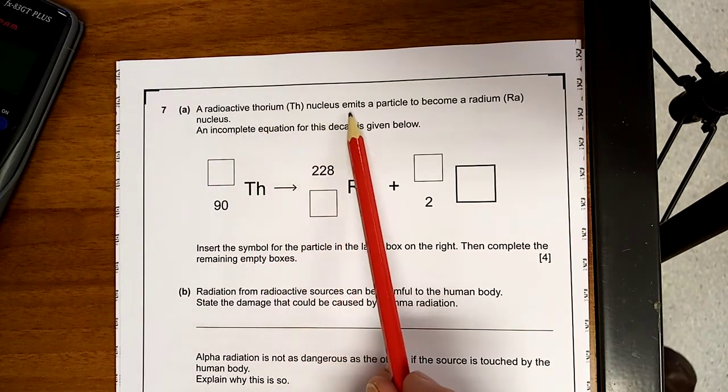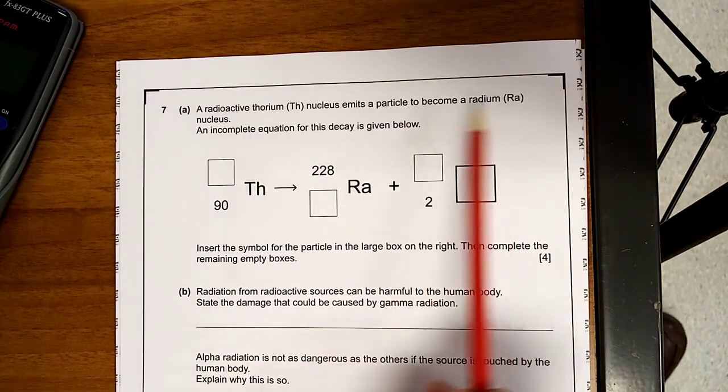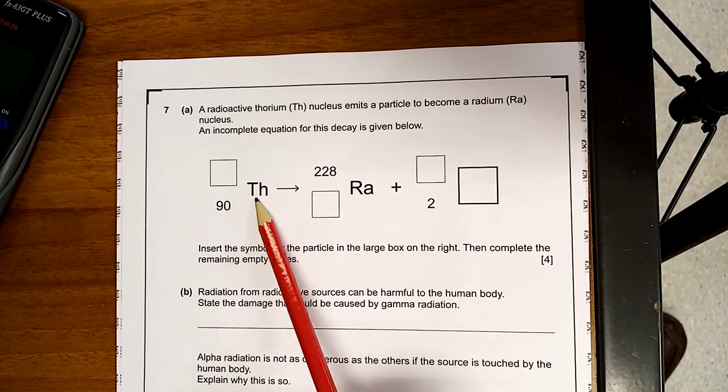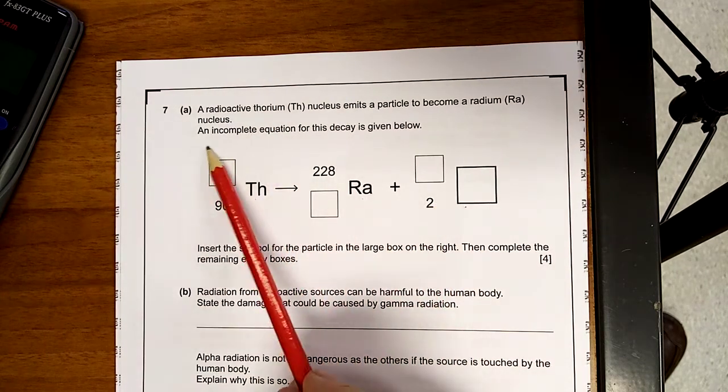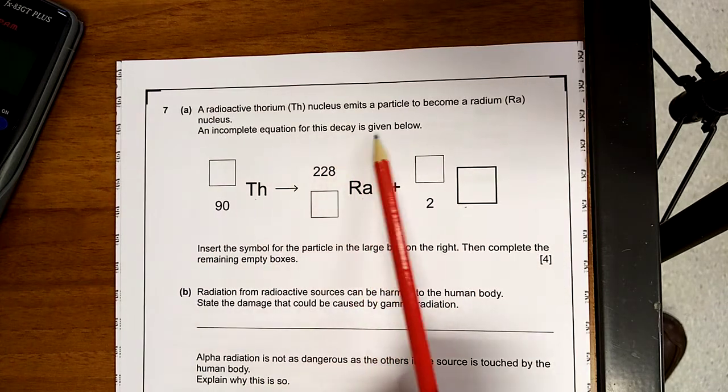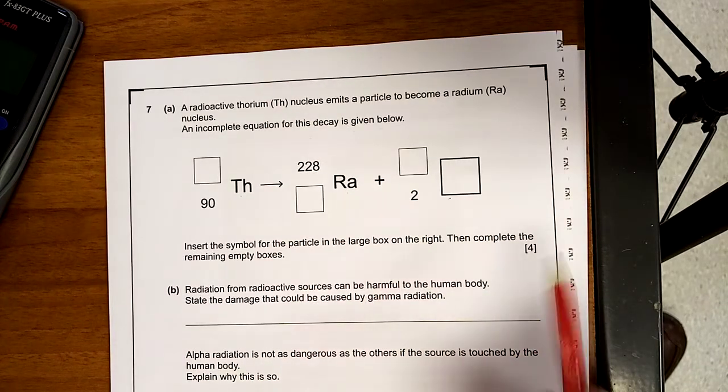A radioactive thorium nucleus emits a particle to become a radium nucleus. So there's your thorium, goes to radium and there's the particle. An incomplete equation of this decay is given below. Now, the important thing about this is there's 4 marks for this.